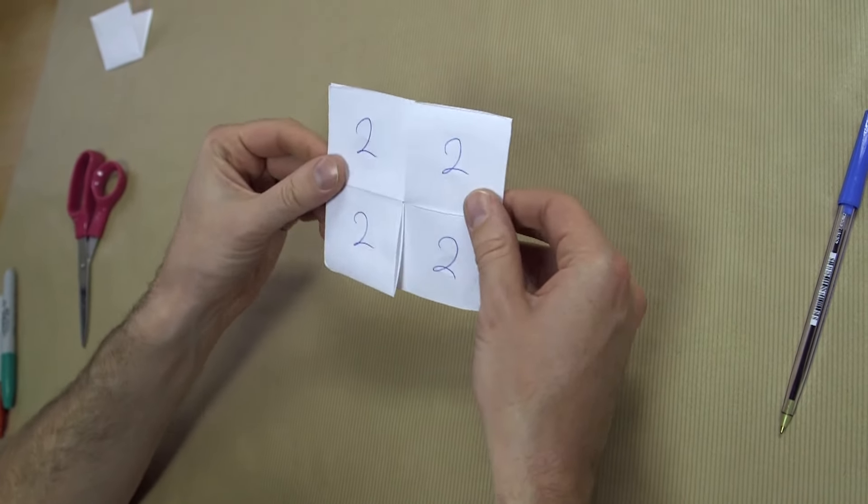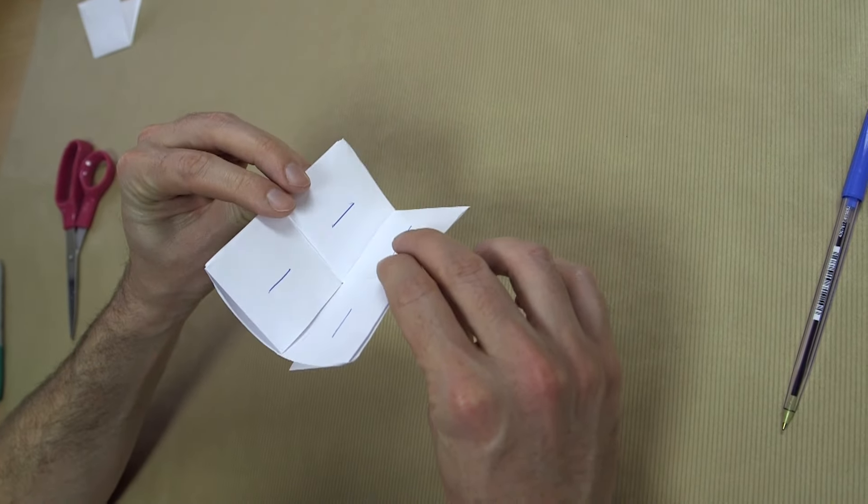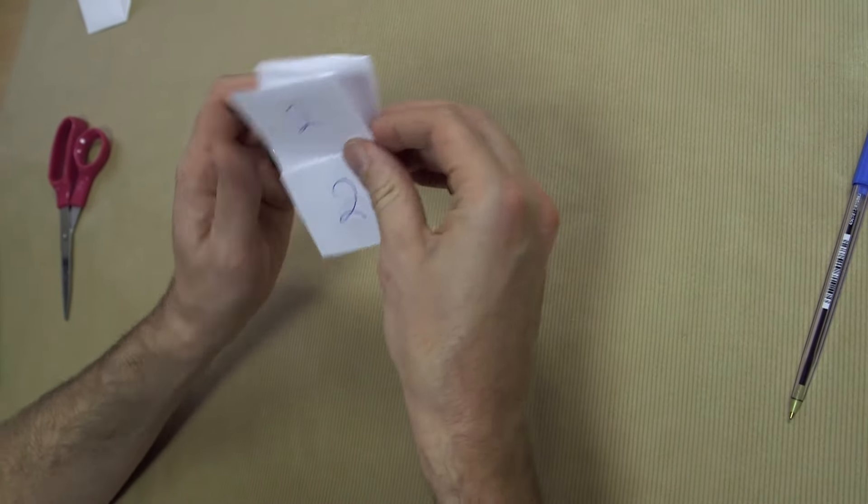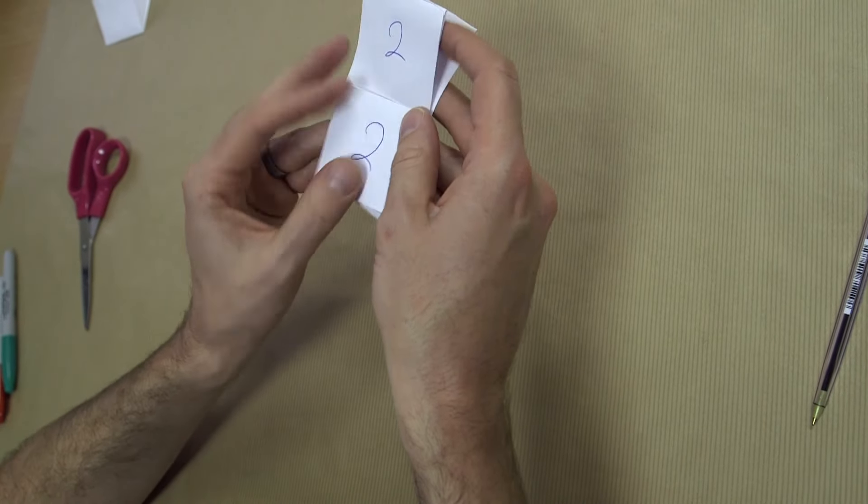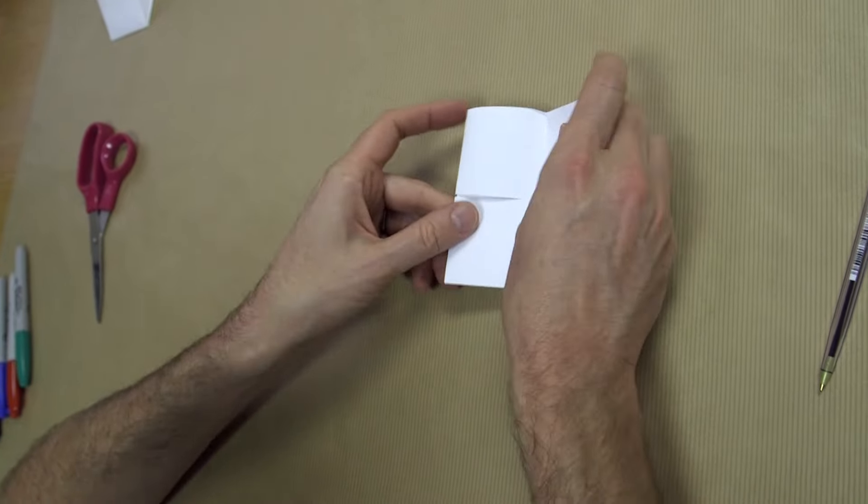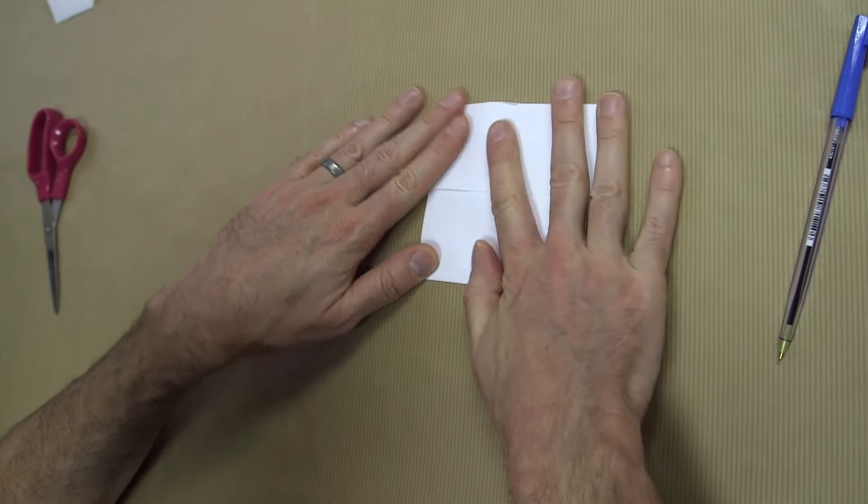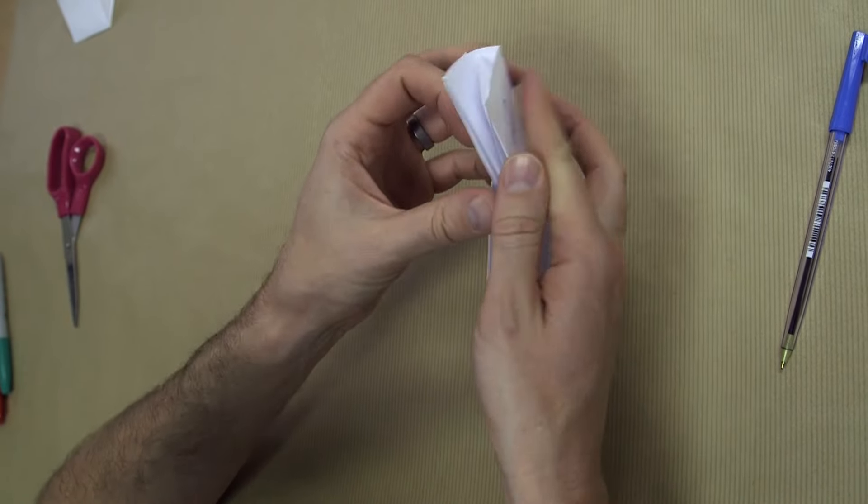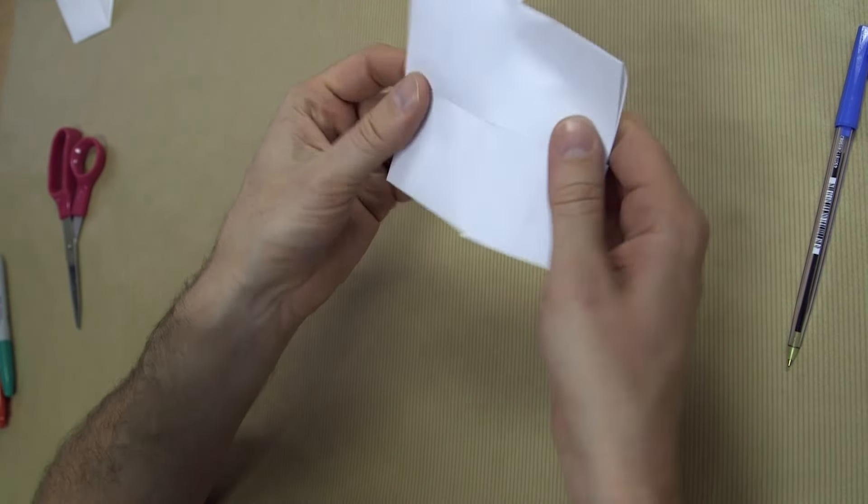And what happens is every time you fold it closed one way, so I'm folding the ones closed with the twos on the outside, I can open it up on the opposite side. So it closes this way, but then I open it the other way around and I get a new face. And so I'm going to label that one. I've got one there, I've got two there, let's label this one four.